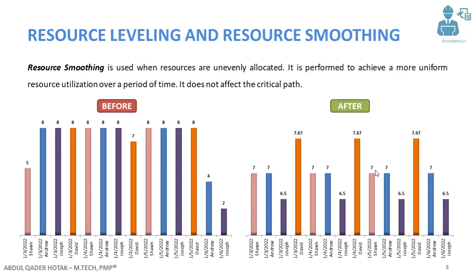For Andrew: Andrew works eight hours on January 3rd, eight hours on January 4th, and four hours on January 6th. What we have done here is deducted one hour from each of the eight-hour days, giving us three hours to redistribute.